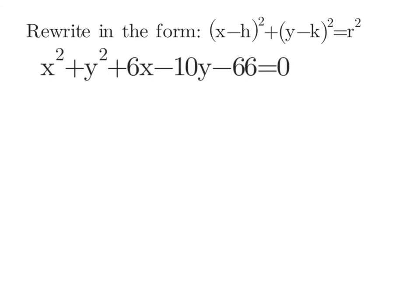So we'll have x squared plus 6x. Then I'm also going to collect all of my y's together. So we'll have y squared minus 10y. As far as that 66 is concerned, it doesn't have an x in it, it doesn't have a y in it. So I'm going to bring it over to the other side of the equation.